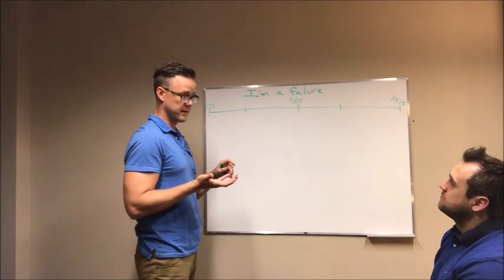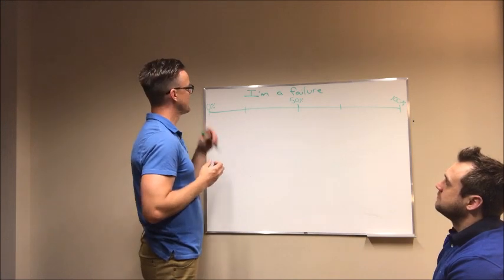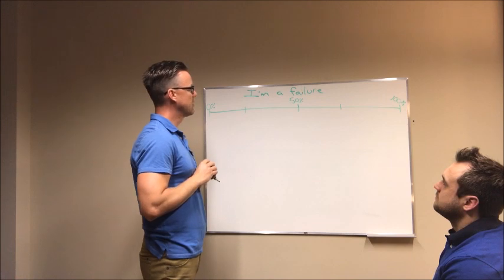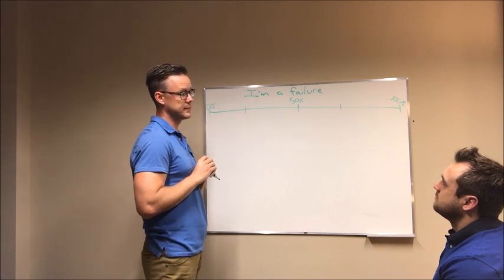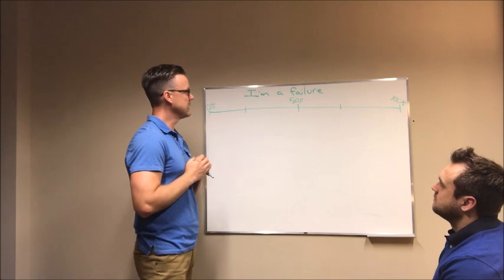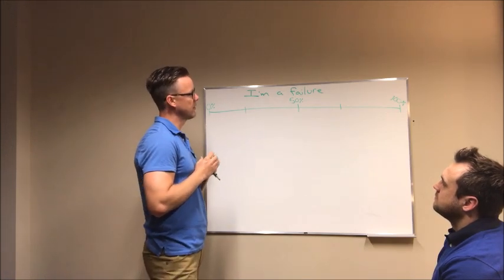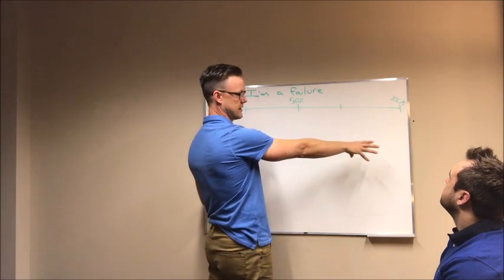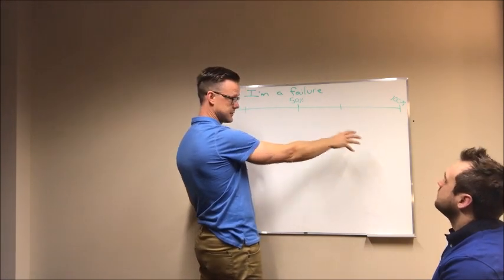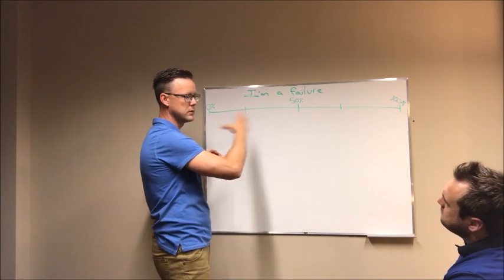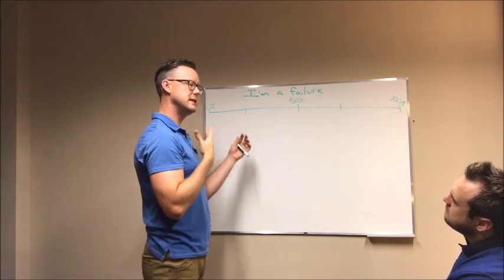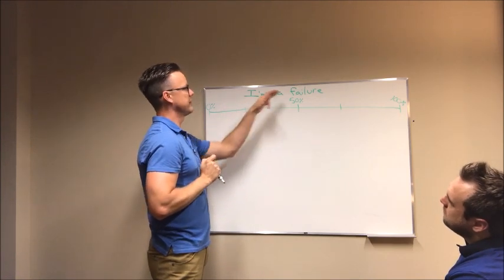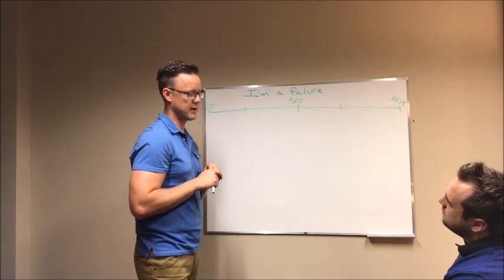Okay Brett, so we've done some work together now and we've found this negative core belief of yours: I'm a failure. And what we're going to do with this now is a technique called the spectrum technique or the continuum technique. I'm going to take a look at this belief and rate it and look at it in terms of what would 100% of that belief look like in a person's life, what would 0%, and then find the middle ground there and sort of see where you fit in that. Right off the bat though, when we think of I'm a failure, how much would you believe that thought just right now?